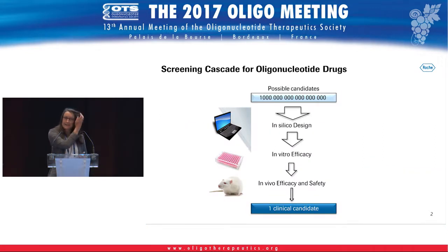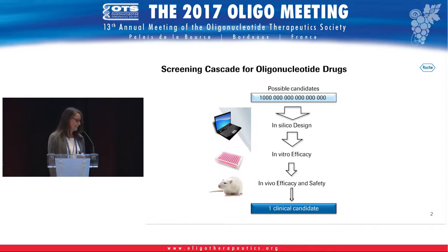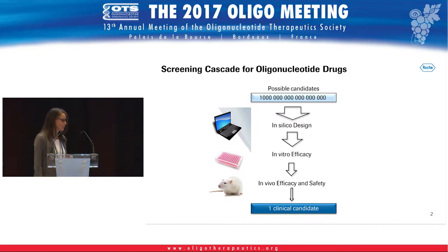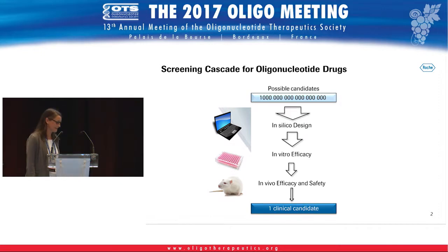Let me start with the classical screening cascade for antisense oligonucleotide drugs. There is nearly an infinite number of possible candidates you can choose among when you start with a new target. In silico design algorithms help us narrow that number down, the best predicted sequences are synthesized, then tested for efficacy for knockdown of the intended target in in vitro systems, and the next step is going into animal models and testing for efficacy and safety in order to finally come up with a clinical candidate.